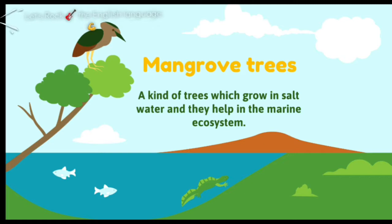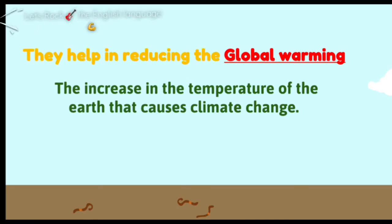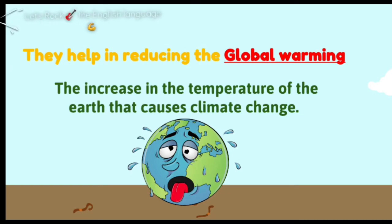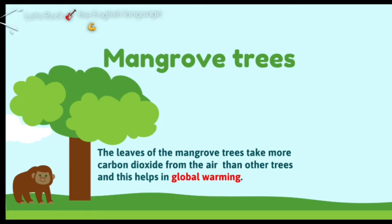How can a tree help in the ecosystem? It's a relationship. So the mangrove trees help living and non-living in the marine ecosystem. The first thing, they help in reducing global warming. Global warming is the increase in the temperature of the earth that causes climate change. The leaves of the mangrove trees take more carbon dioxide from the air than any other tree, and this helps with global warming by reducing the carbon dioxide in the air.